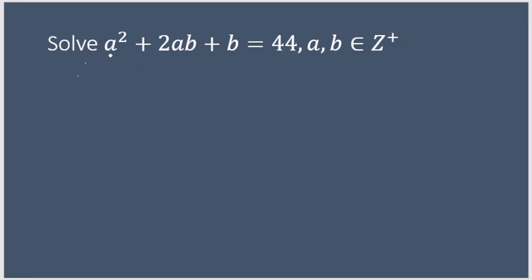First of all, if you look at the problem, it is given that a² + 2ab + b = 44, and a and b are both positive integers. So how do we solve this? Let us start. We have a² + 2ab + b = 44.